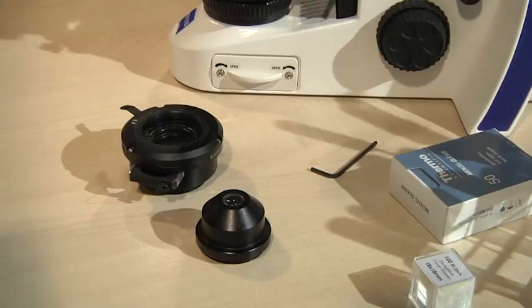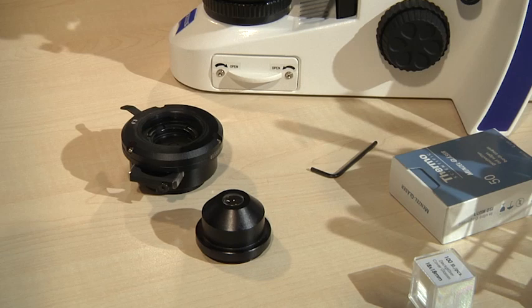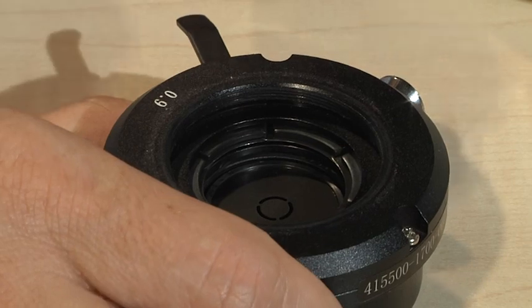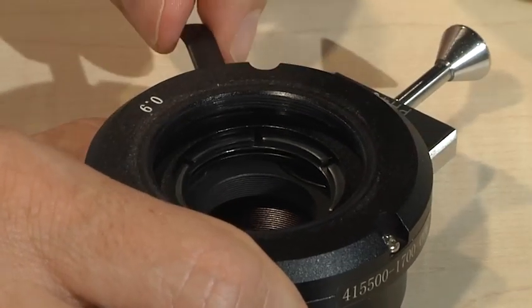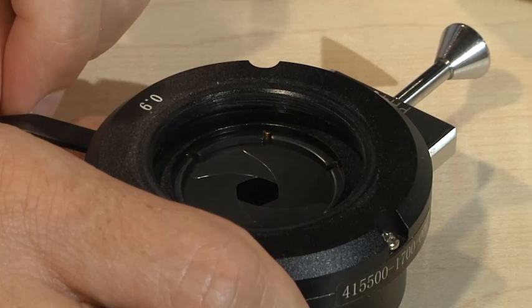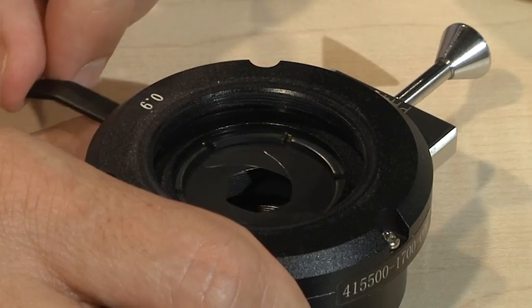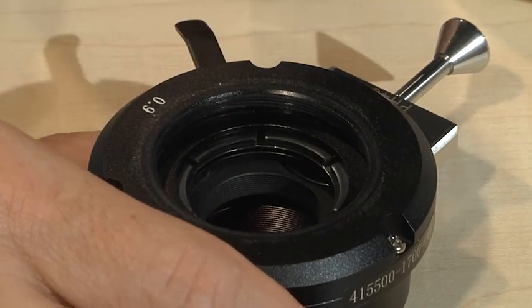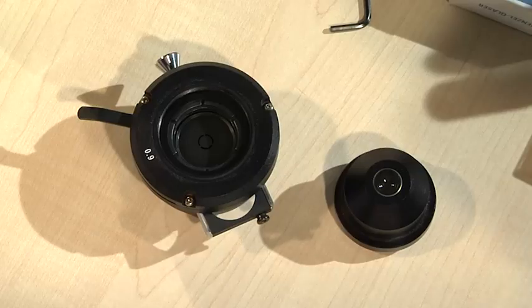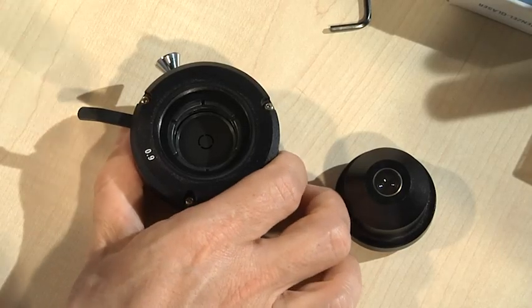This is the demounted condenser. A simple Abbe condenser consists of one or two lenses and a condenser aperture diaphragm placed below these lenses. Alternatively, the condenser annulus is placed here. The condenser annulus is part of the phase contrast system, which is particularly important for visualization of living microorganisms.